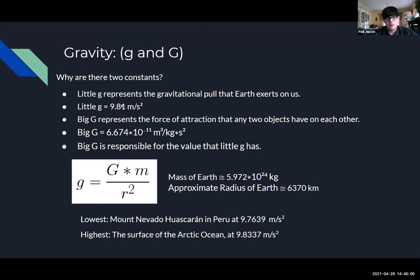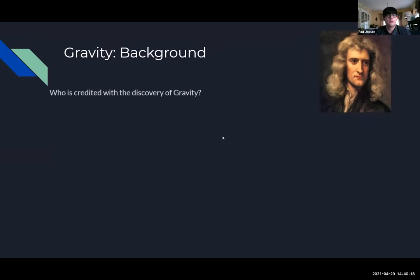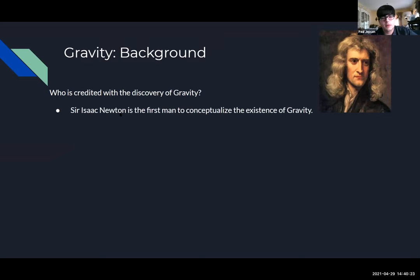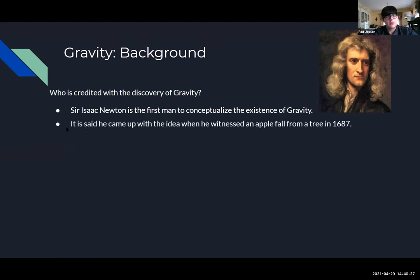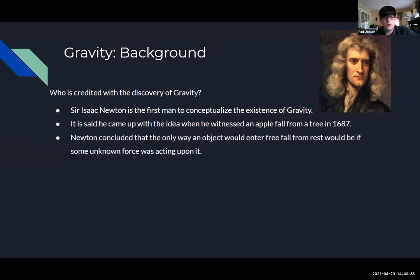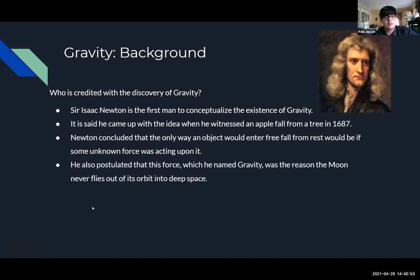Sir Isaac Newton was the first man to conceptualize gravity. It is said he came up with the idea when he witnessed an apple fall from a tree. In 1687 he concluded that the only way an object would enter free fall from rest is if some unknown force was acting upon it. He also postulated that this force — which he named gravity — was the reason the moon never flies out of its orbit into deep space. Without gravity we wouldn't have a solar system.